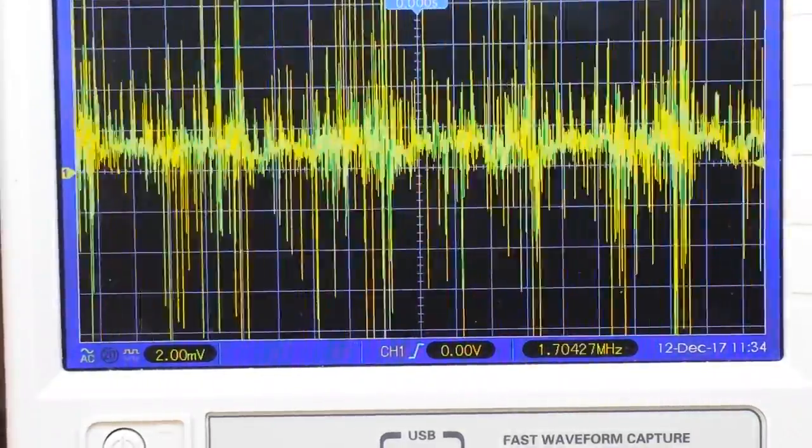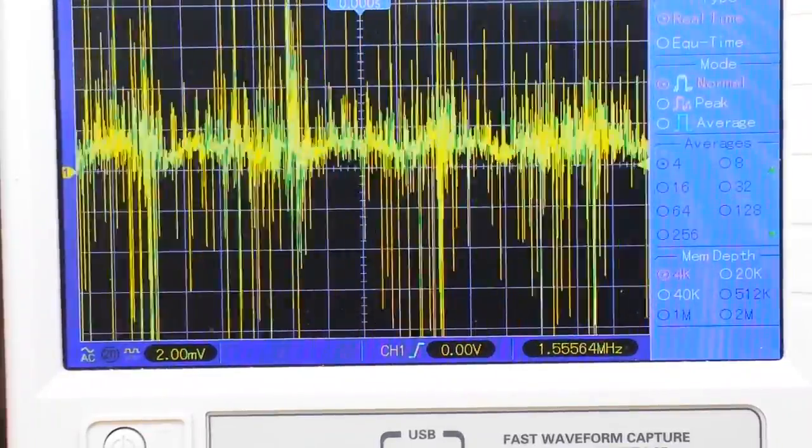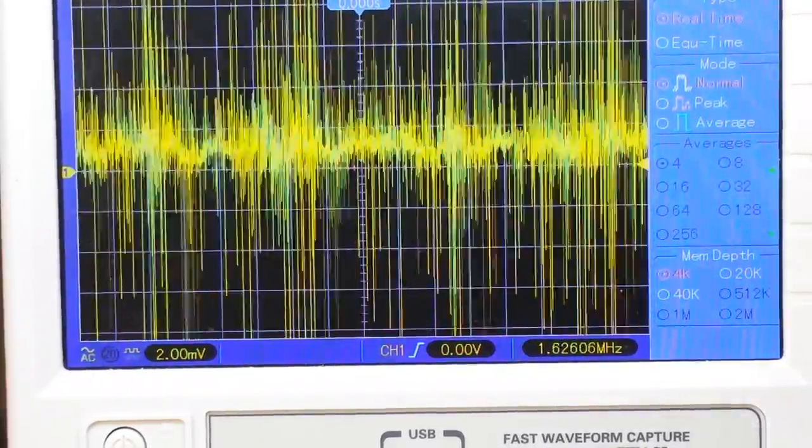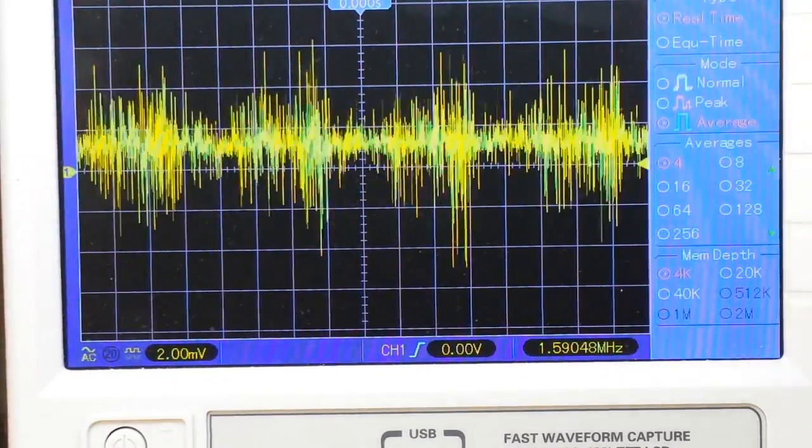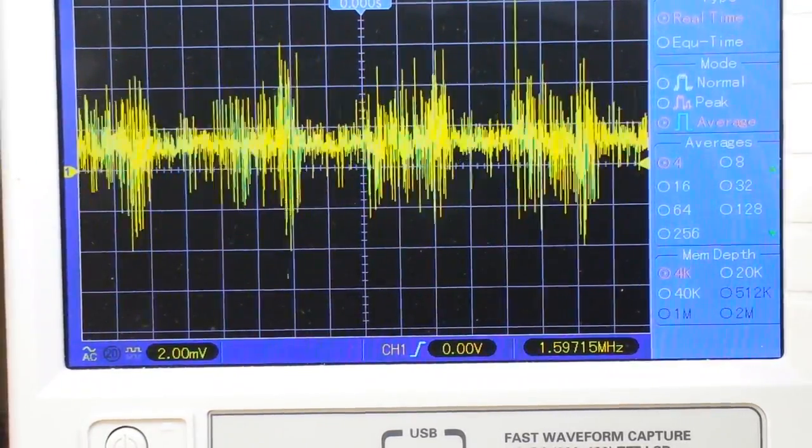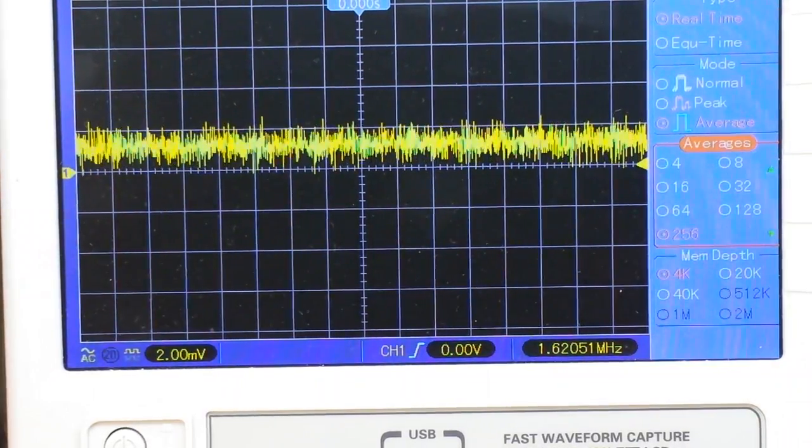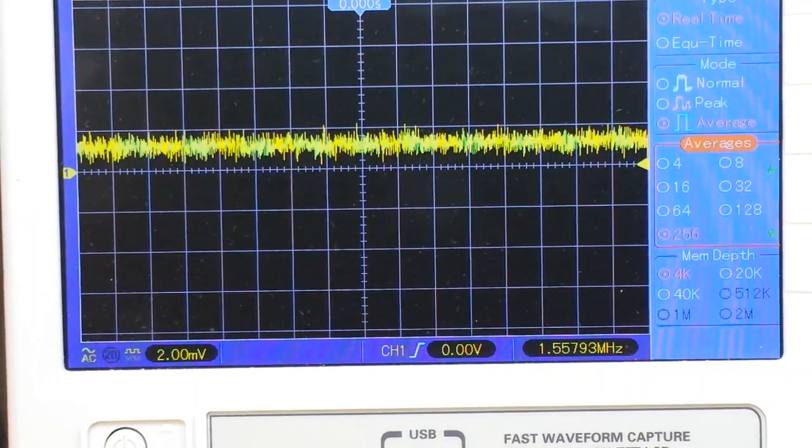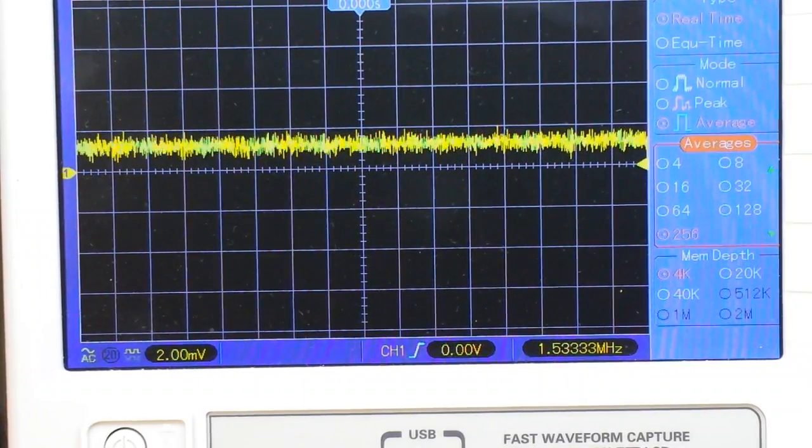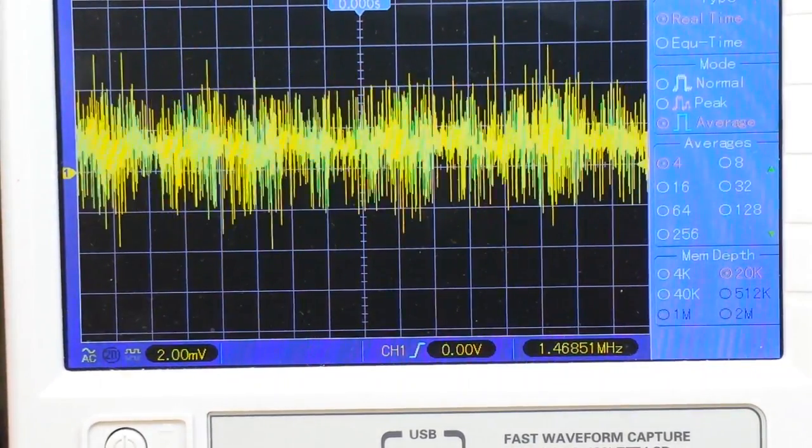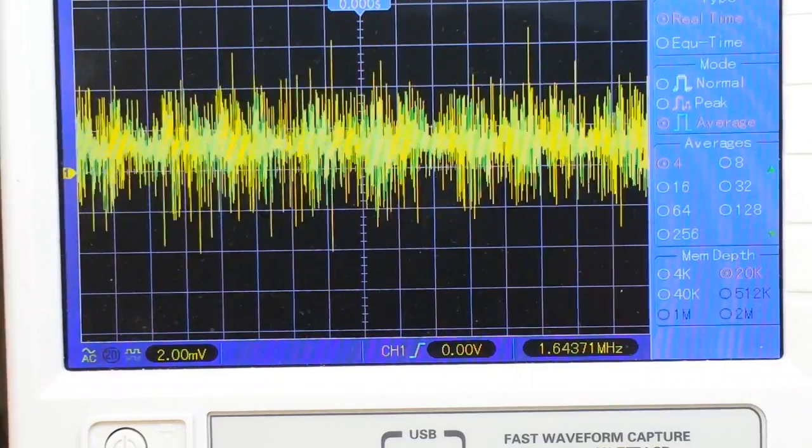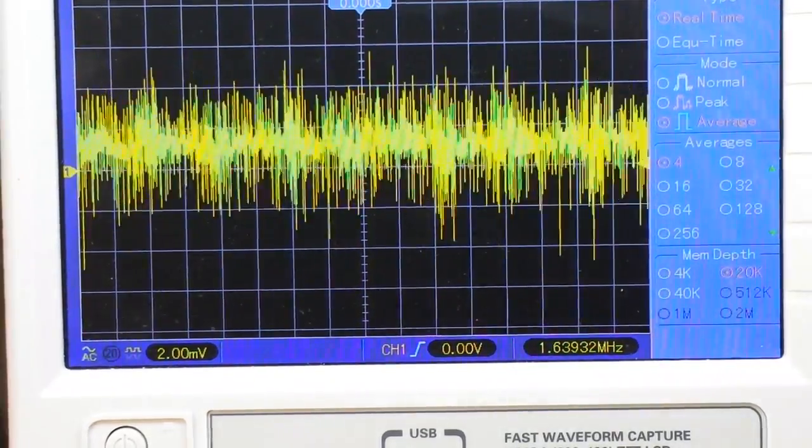So what we need to do is come into our acquire menu. And we're going to choose the mode, we have average. And then I'm going to go up to the maximum number of averages, which for my scope is 256. Then I'm also going to increase the memory depth. And that's going to give us a nice average.